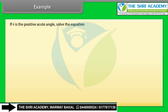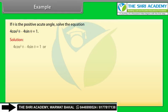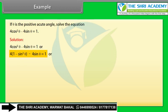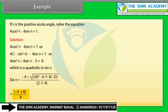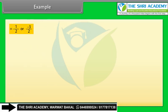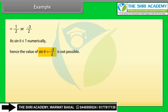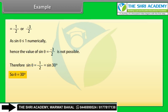Example: If θ is a positive acute angle, solve 4cos²θ − 4sin θ = 1. Solution: 4cos²θ − 4sin θ = 1 → 4(1 − sin²θ) − 4sin θ = 1 → 4sin²θ + 4sin θ − 3 = 0, which is a quadratic in sin θ. Using the quadratic formula: sin θ = (−4 ± √(16 + 48)) / 8 = (−4 ± 8) / 8 = 1/2 or −3/2. Since |sin θ| ≤ 1, the value −3/2 is not possible. Therefore sin θ = 1/2 = sin 30°, so θ = 30°.